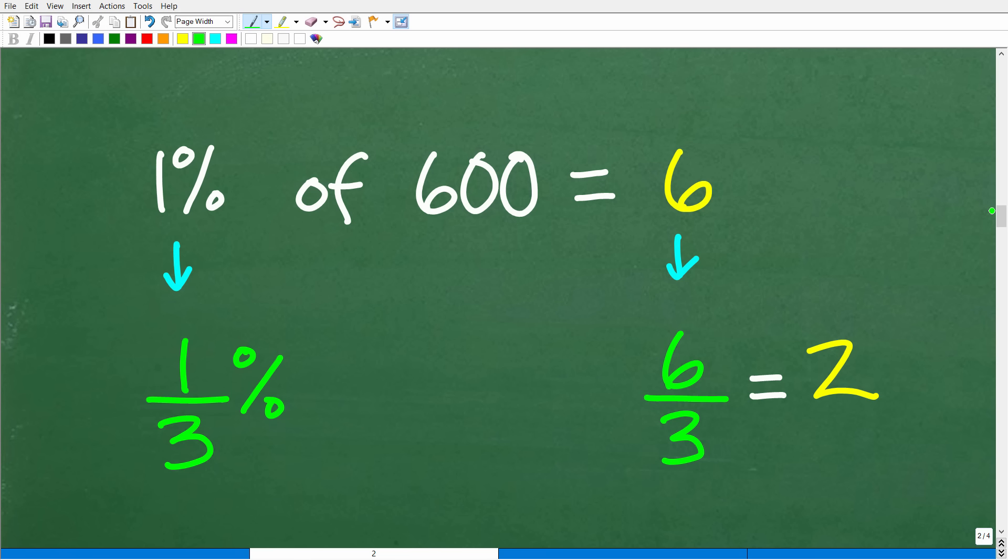Now that we know that 1% of 600 is six. And of course we went through and reviewed how to do that. The question is, well, what is one third percent of 600? So we have 1% and we want one third percent. So how can I go from a 1% to a one third percent? Well, just take that one and divide it by three.